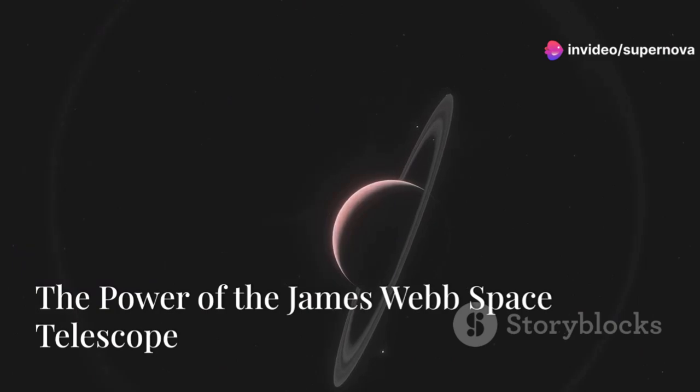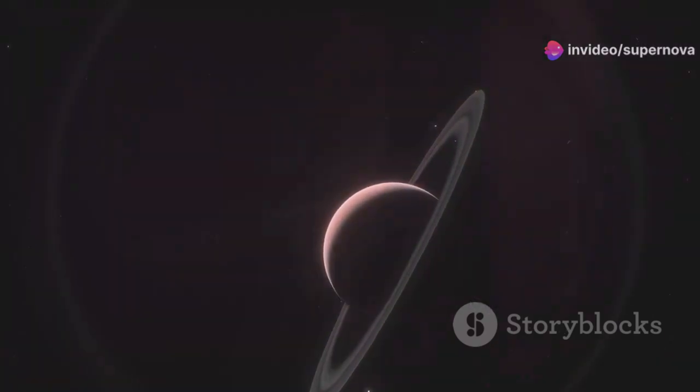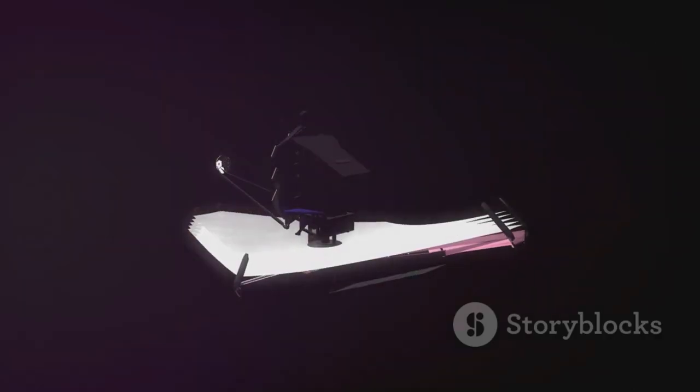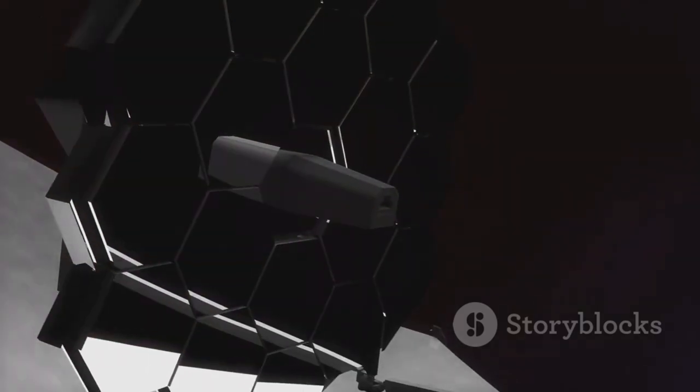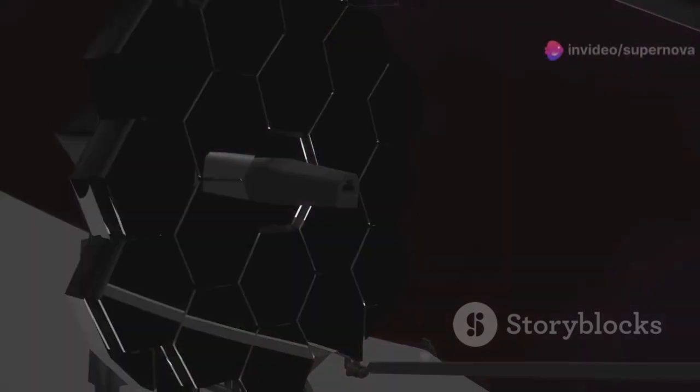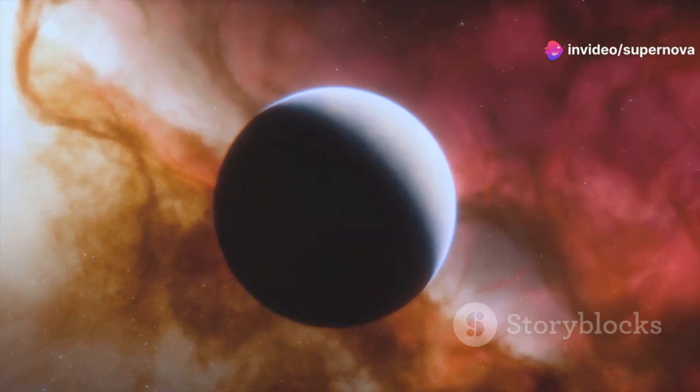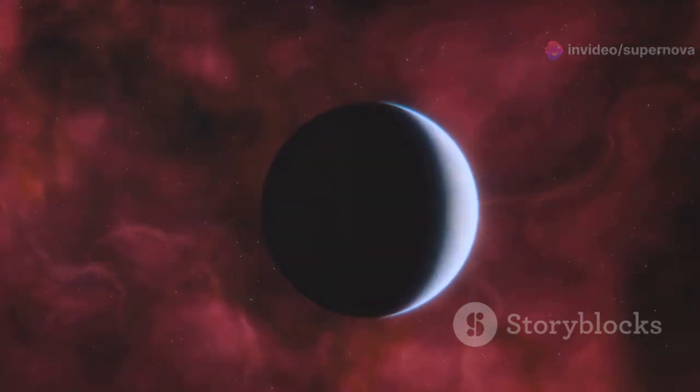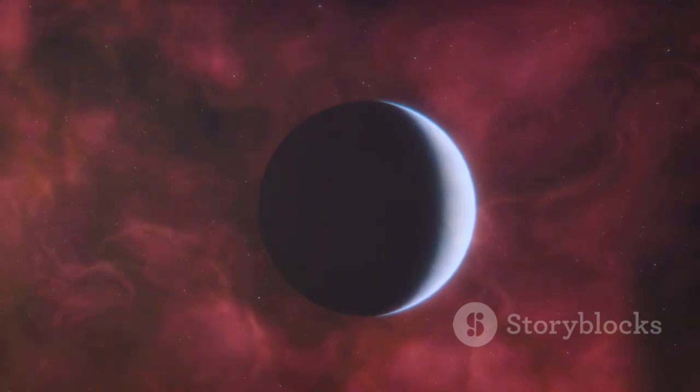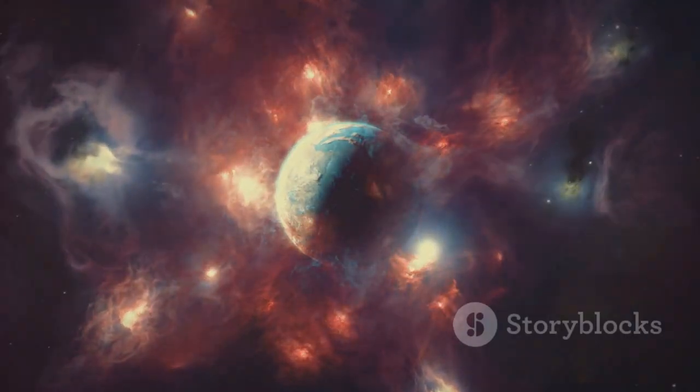Unlocking Proxima's secrets. The power of the James Webb Space Telescope. The James Webb Space Telescope or JWST, is a technological marvel. It is the most powerful space telescope ever built. It promises to revolutionize our understanding of the universe. Its advanced instruments allow it to observe distant objects with unprecedented clarity. This includes exoplanets like Proxima b.